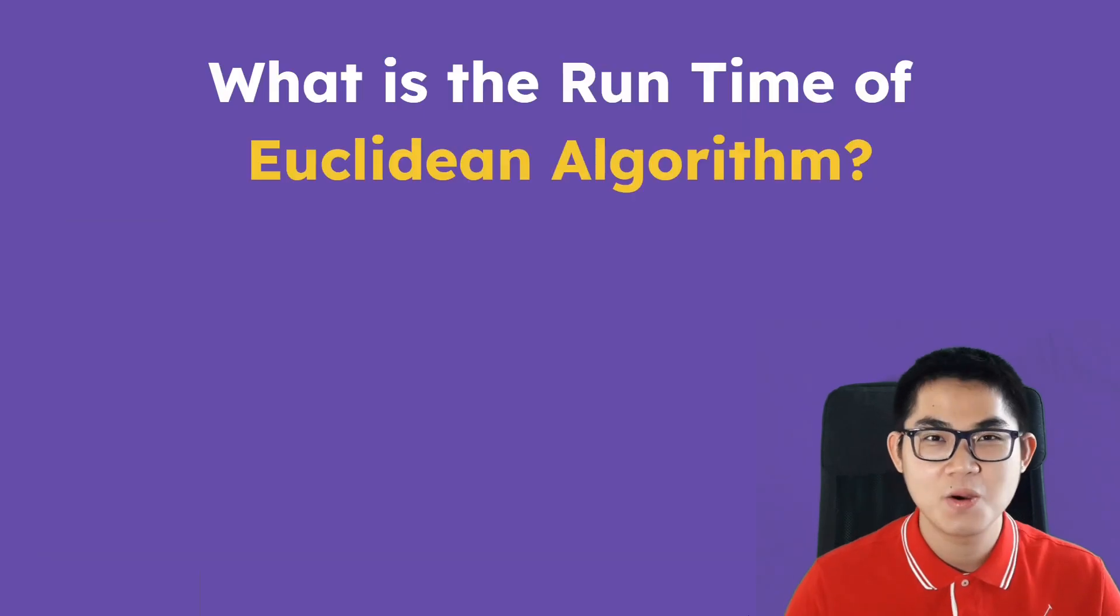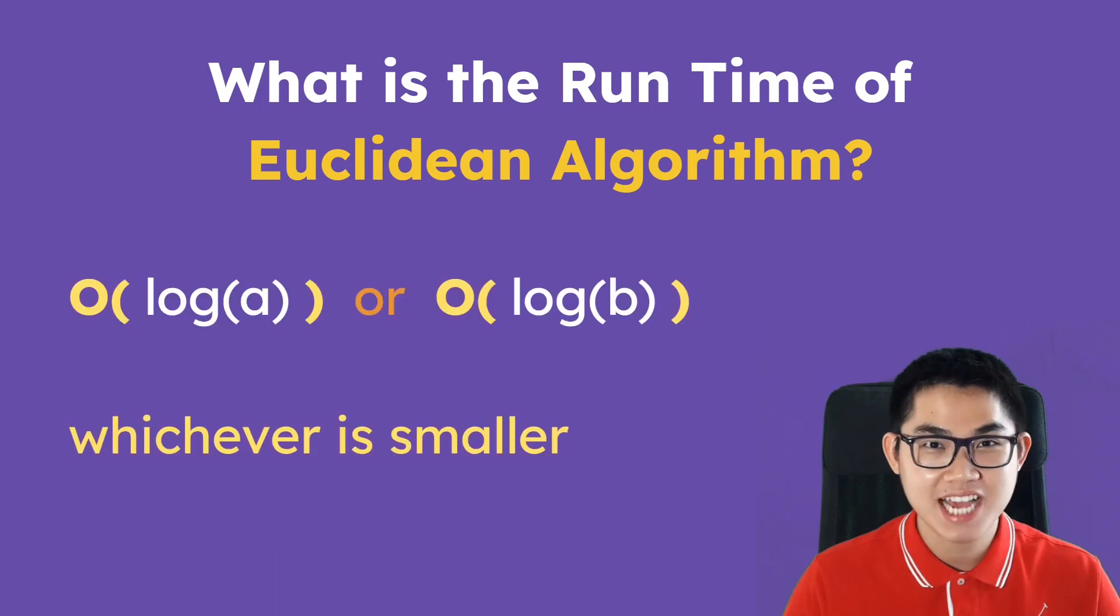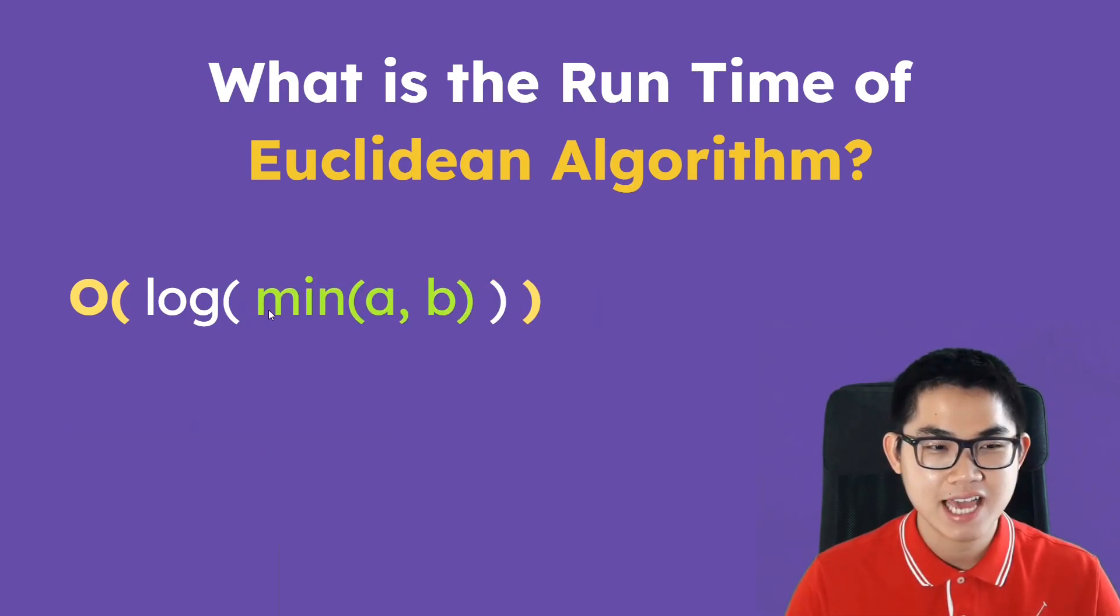What is the runtime of the code that we just saw? Well, the runtime is going to be log of a or log of b, whichever value is smaller. So you can combine this together and that's going to be big O of log of min(a, b).